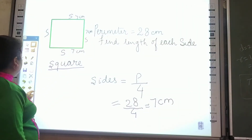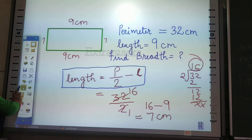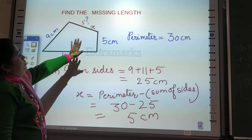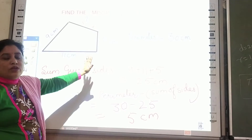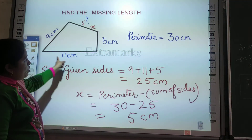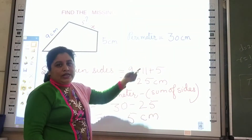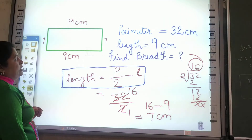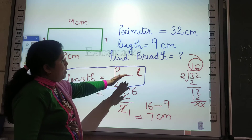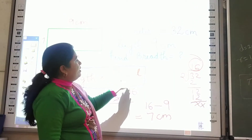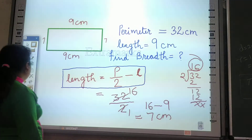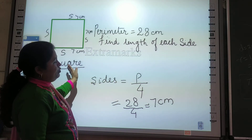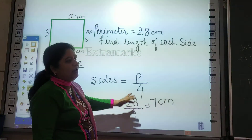Let's review what we learned. To find the missing length: if any general plane figure is given — rectangle, square, or any other — Formula 1: sum of given sides, then subtract from the perimeter. If a rectangle is given, Formula 2: perimeter divided by 2, then subtract the given value — if length is given subtract length, if breadth is given subtract breadth.